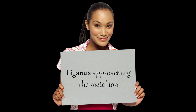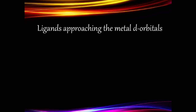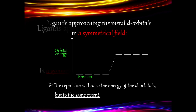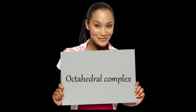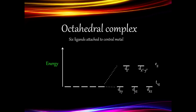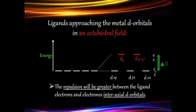There are two ways in which the ligand can approach the metal ion: in a symmetrical field or an octahedral field. In a symmetrical field, the repulsion will raise the energy of the d-orbitals all to the same extent. However, in an octahedral field, two of the orbitals — the dz² and the dx²−y² orbitals, known as the axial orbitals — will be raised to a greater energy than the other three orbitals: the dxy, dyz, and dxz, known as the interaxial orbitals. This is essentially what is meant by the splitting of the d-orbitals.